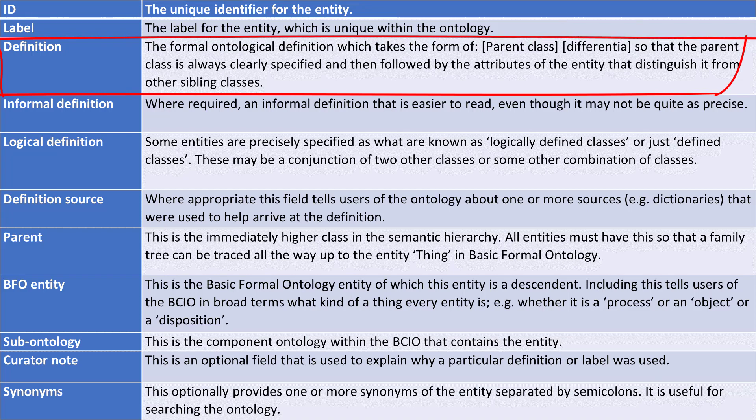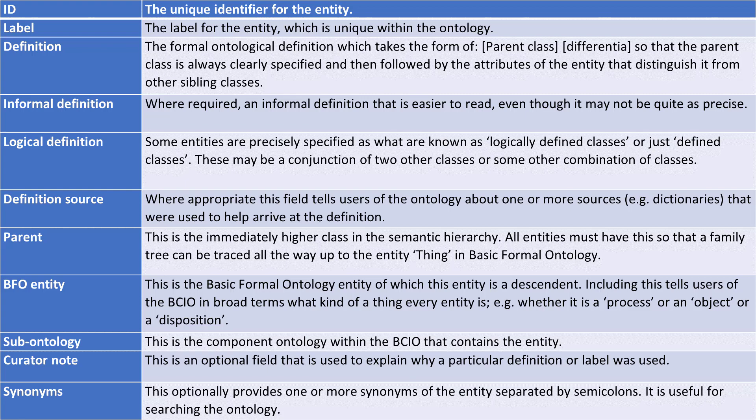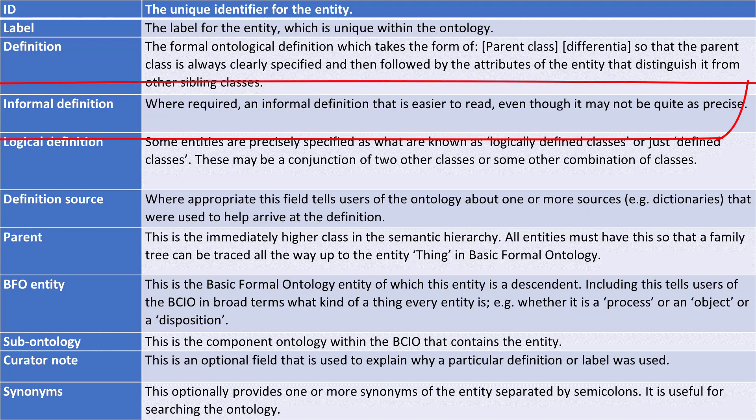Then we have the definition, which lies at the heart of the entity. This is a formal ontological definition, which always takes the form of a parent class — whatever the class is that's immediately above the class we're trying to define — and then what's known as the differentia: the features of this particular class within the parent class that distinguishes it from its sibling classes. And then, because formal ontological definitions are often quite hard to read, we also provide what's known as an informal definition, which is less precise but somewhat easier to read.